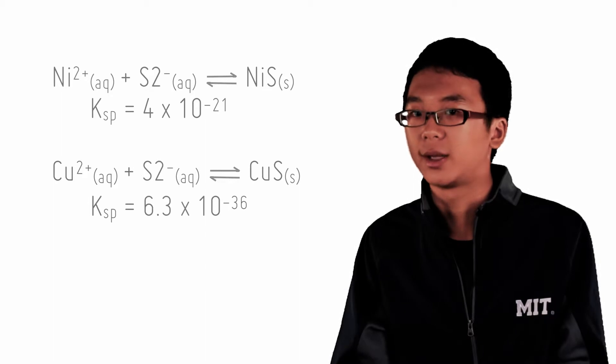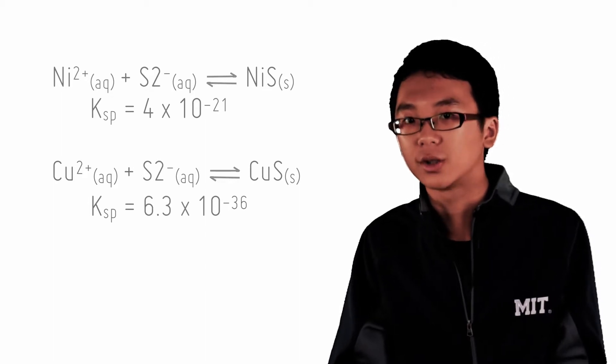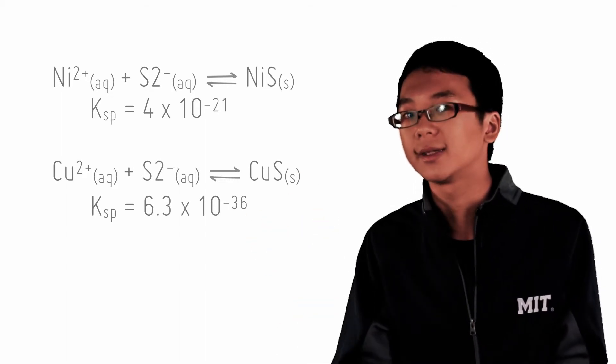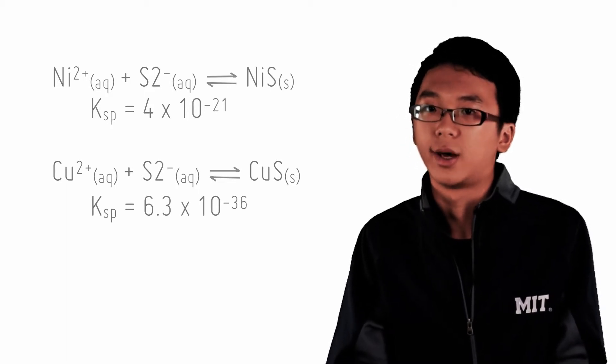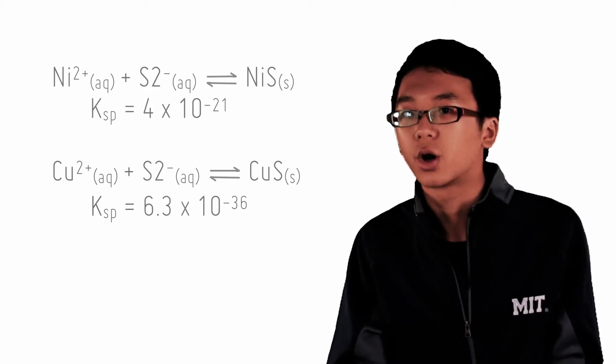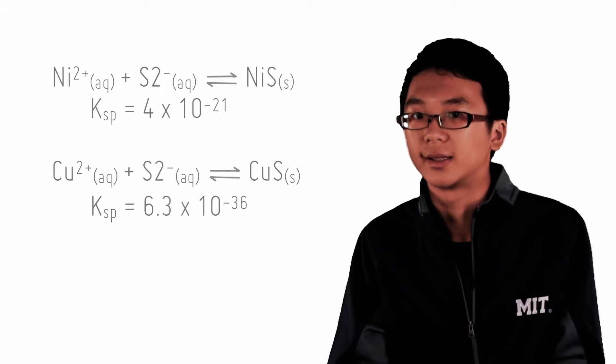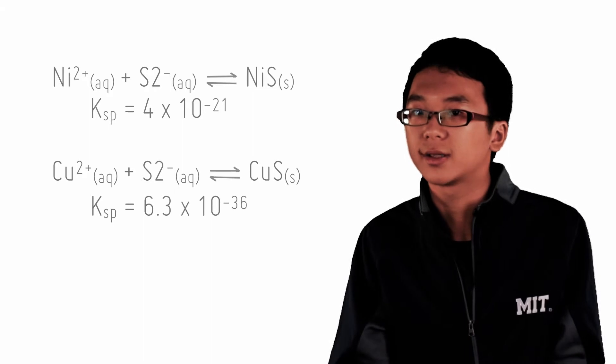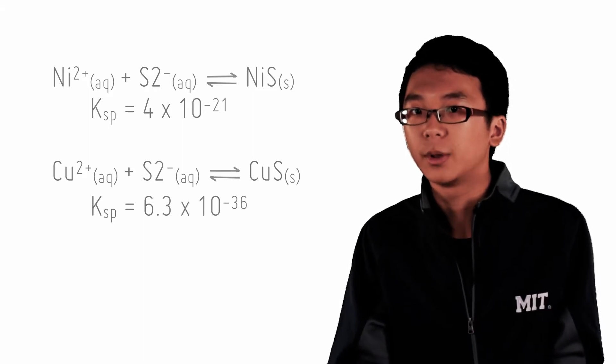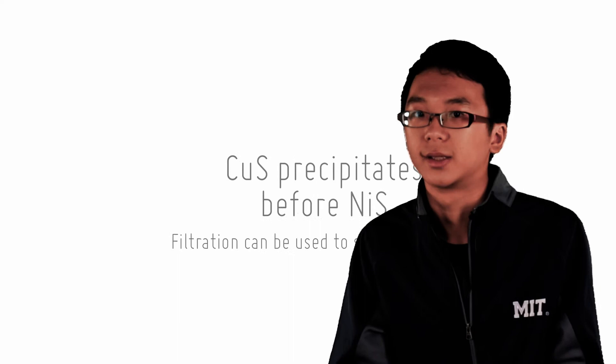As the concentration of S2- increases, the reaction quotients of both CuS and NiS both increase. The KSP of CuS, however, is so small compared to the KSP of NiS such that a tiny concentration of S2- easily causes the reaction quotient Q to be greater than K, forming the precipitate first.